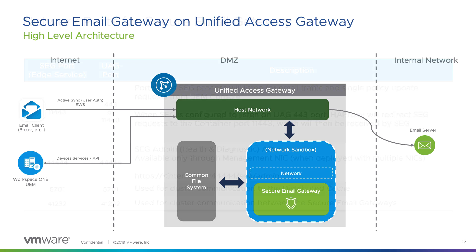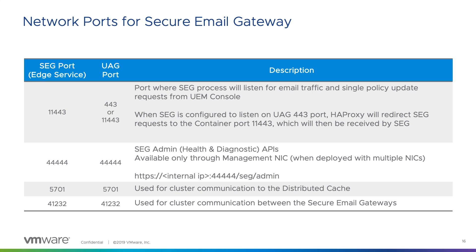From the network ports perspective, there are a couple of new ports. The first is the SEG port — the local port that SEG runs on Unified Access Gateway, which is 11443. External communication on the UAG goes through port 443 using TLS port sharing, or 11443 if you want to use the standard port. Communications to the SEG admin APIs for health and diagnostic pages go through port 44444, available only through the management NIC when deploying multiple NICs. When you enable clustering in Secure Email Gateway, you'll have two ports for clustering communication: 5701 and 41232, which are the standard ports used by SEG for all deployment types prior to Unified Access Gateway.